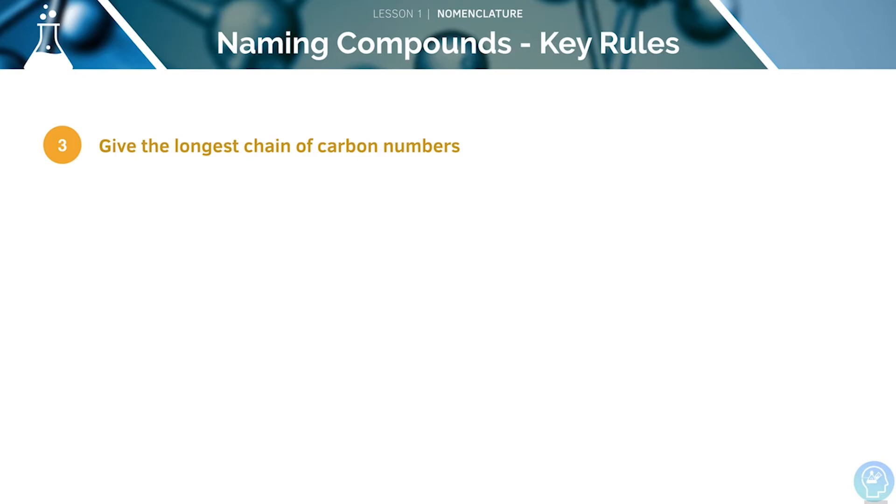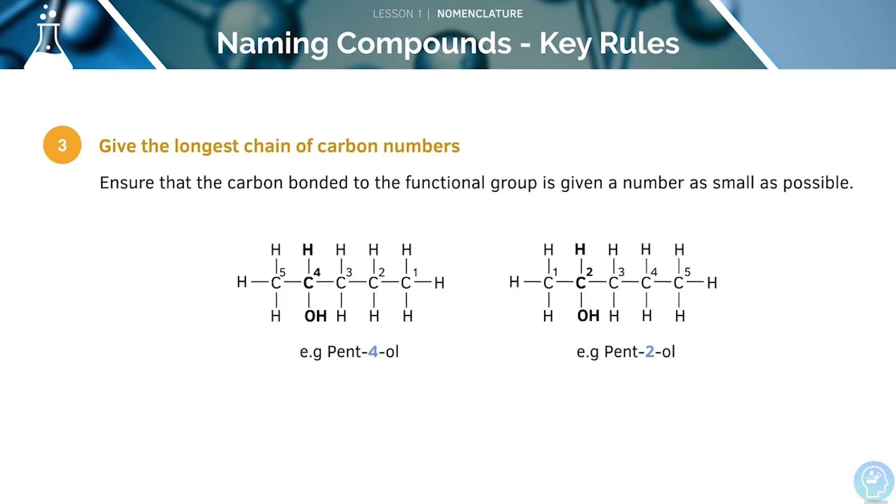The third step is to find the longest chain of carbons. We must ensure that the carbon bonded to the functional group is given as small a number as possible. Here, we can see two possible names, pent-4-ol or pent-2-ol.